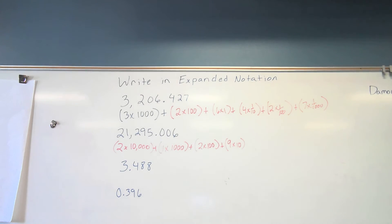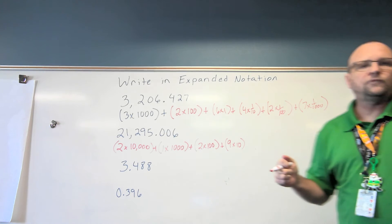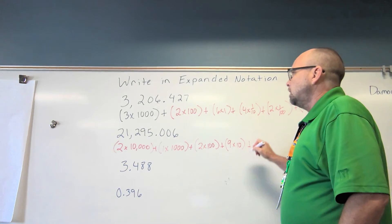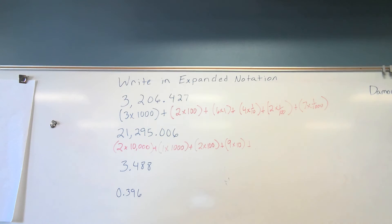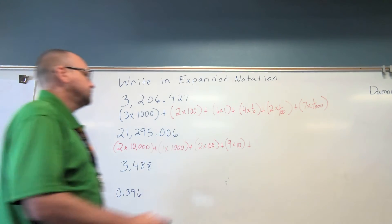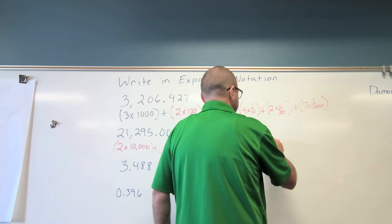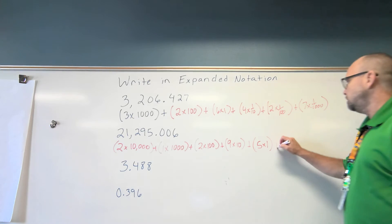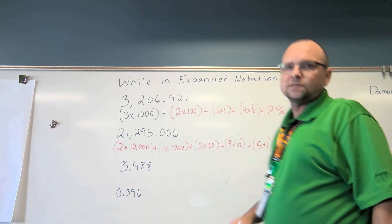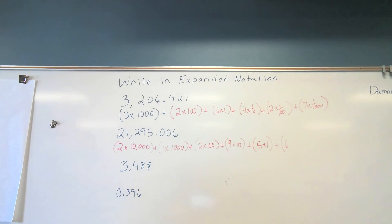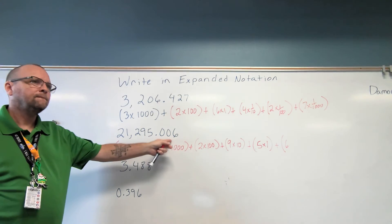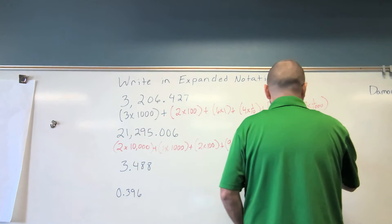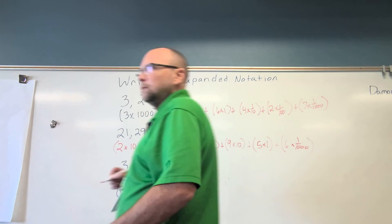Plus, nine times ten. All you have to do is know your place values for this. I mean, and luckily for you, I gave you a place value chart, because, you know, I'm cool that way. Plus, what place value is the five in, Connor? The one. Plus five times one. We don't have to do anything that's a zero. So, what place value is the six in, Connor? Thousands. Plus six times one thousand.